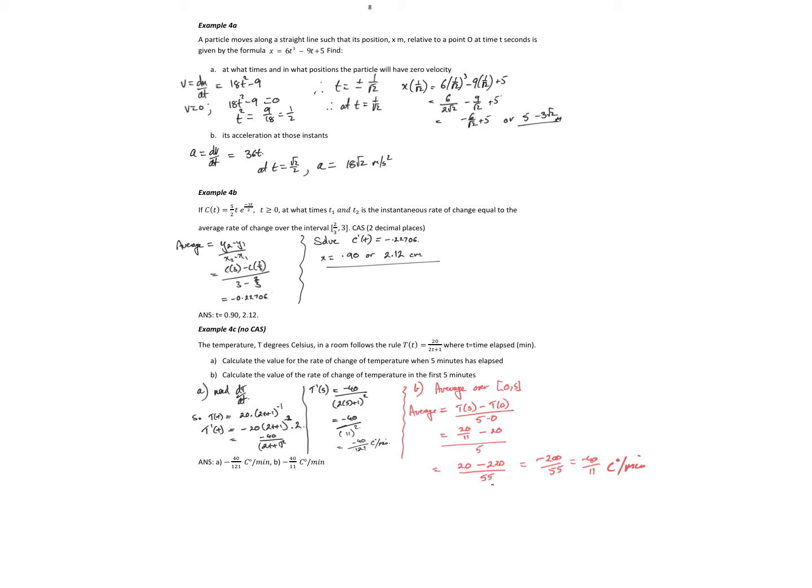Okay, so a particle moves along a straight line such that its position relative to a point is given by the formula. So that's its position. The key here, if that's my position, my velocity is the rate the position changes. So velocity is dx dt. And dx dt here is 18t squared minus 9. So that's my velocity rule.